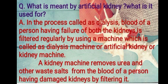Next question: what is meant by artificial kidney and what is it used for? In the process called dialysis, blood of a person having failure of both kidneys is filtered regularly by using a machine called a dialysis machine, or artificial kidney, or kidney machine. A kidney machine removes urea and other waste salts from the blood of a person having damaged kidneys by filtering it.